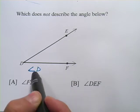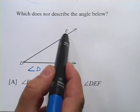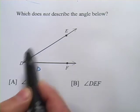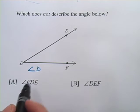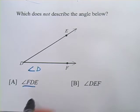The rule is that this vertex has to be in the middle. So you could call this EDF or FDE. And here our choices are, we've got FDE as one, and I know that works.